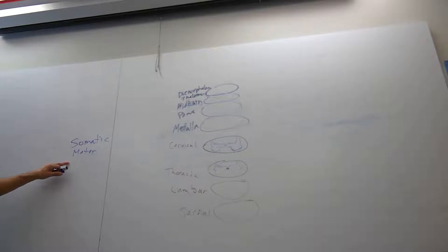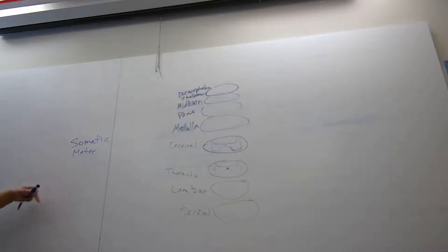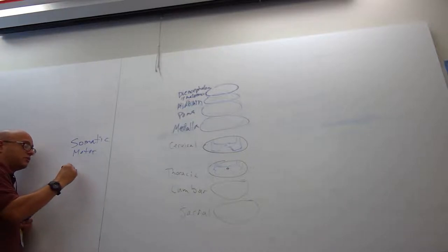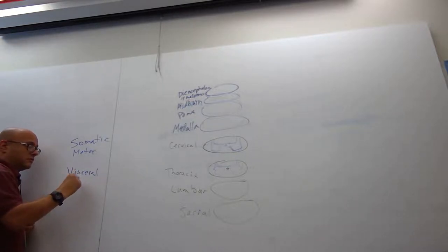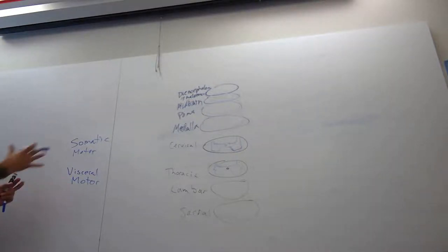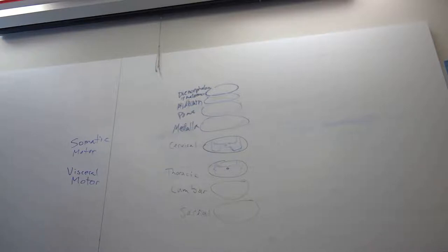Somatic isn't going to cardiac and smooth. The sensory system is still sensory — it's still pulling information back into the spinal cord. If it's pulling from the body, that's what the spinal nerve's job is. It's pulling from organs.